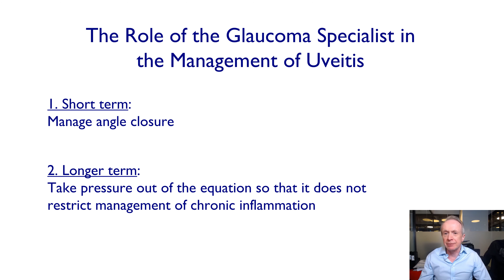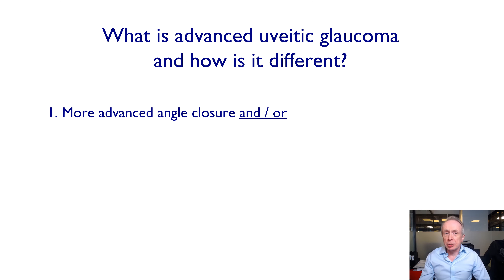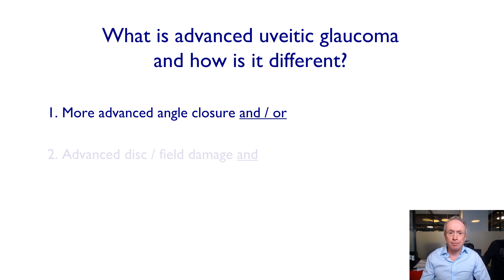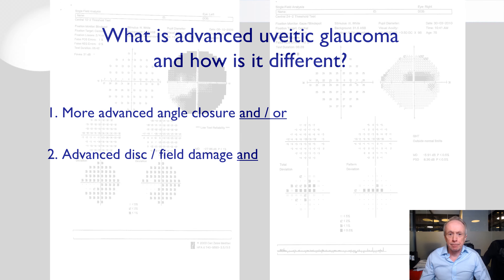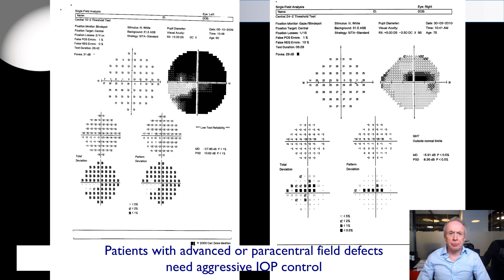In other words, we do not reduce steroids at the expense of chronic inflammation in order to reduce the eye pressure — that is a false economy. What is advanced uveitic glaucoma and how is it different? We're talking about severe angle closure requiring urgent surgery, and/or advanced disc and visual field damage. The visual field can often be difficult to measure and confusing in uveitic glaucoma due to media opacity and choroiditis — advanced visual field loss on the left, significant paracentral defect that could cause loss of central vision on the right.